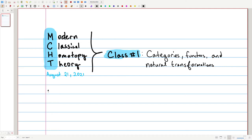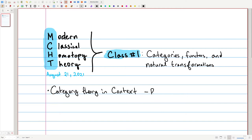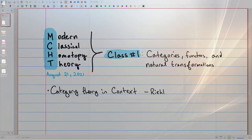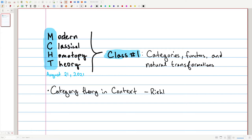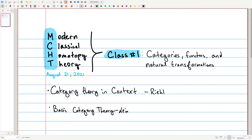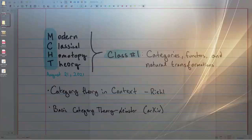If this is your first time learning category theory, it's perhaps not best to learn it from a homotopy theory book. There are many good books on the subject — there's Category Theory in Context, and another very good one by Leinster called Basic Category Theory, which is up on arXiv.